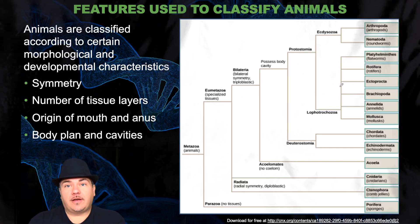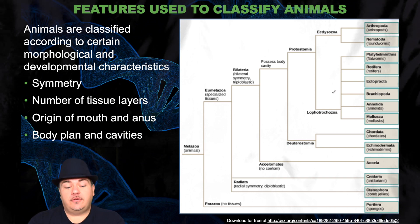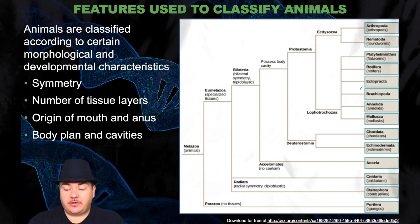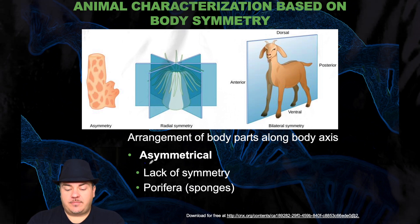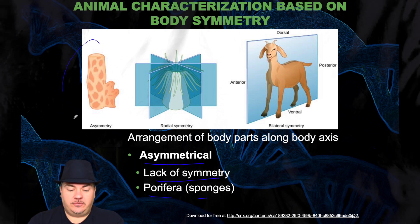Animals are classified according to certain morphological and developmental characteristics: their symmetry, the number of tissue layers, origin of the mouth and the anus, and their body plan and cavities. First is the arrangement of body parts along the body axis. Some animals are asymmetrical — they lack symmetry. The example of this is Porifera, which are sponges.